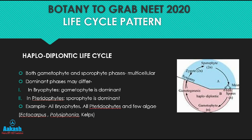Life cycle patterns can be haplontic, haplodiplontic, or diplontic, but in all these situations we observe alternation of generation between the gametophyte and the sporophyte. After discussing the evolutionary trends of gametophyte and sporophyte in the plant kingdom and the different types of life cycles in plants, it is time to attempt some NEET exam questions from this section — a next video is coming up. Keep yourself updated with the videos; till then, stay home, stay safe, and take care.